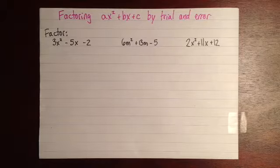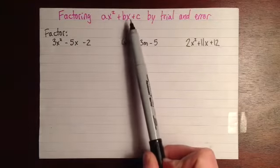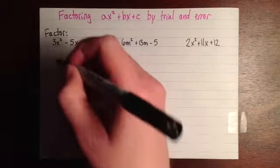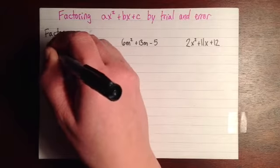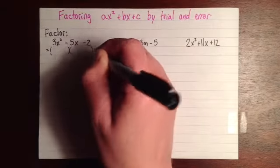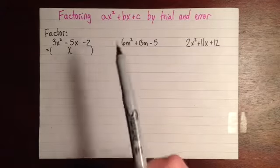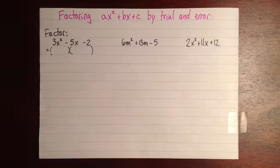When we have trinomials like this, with an x squared term, an x term, and then a constant term, they're pretty much always going to factor into two binomials, just like when we did it with only one x squared, and it's kind of the same idea.